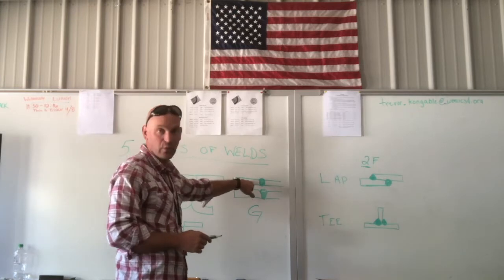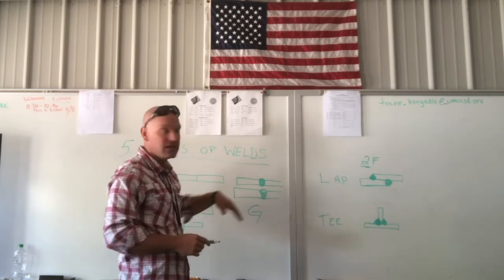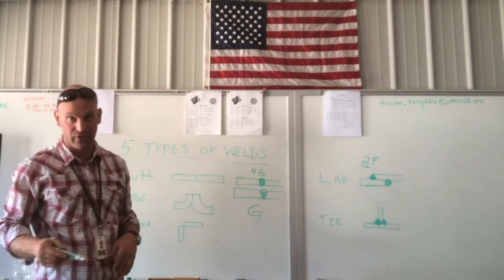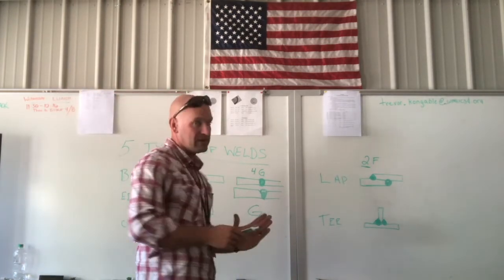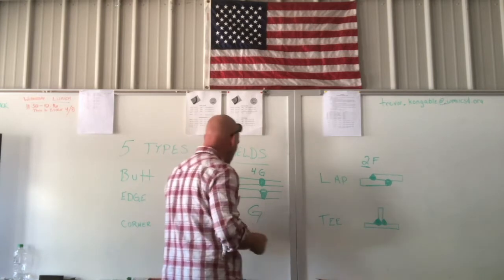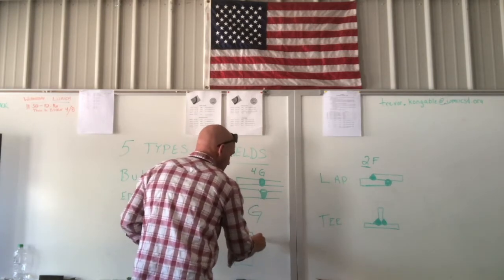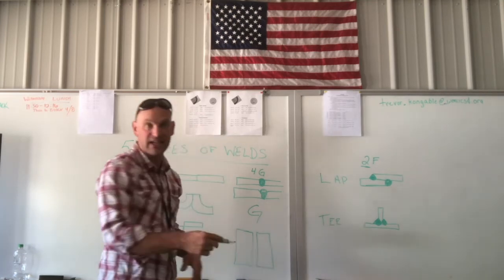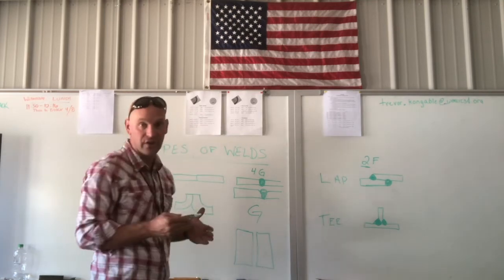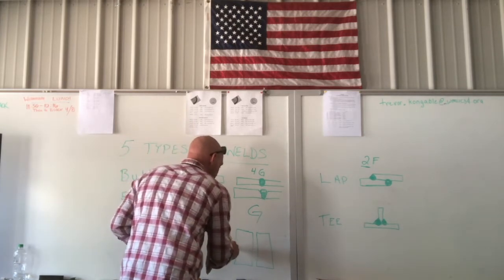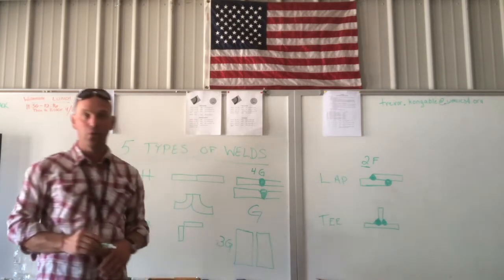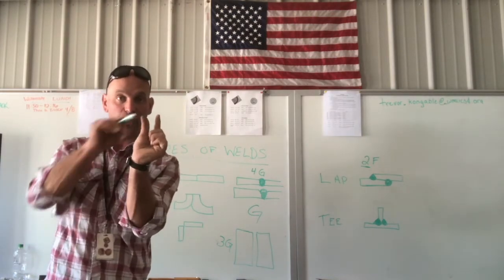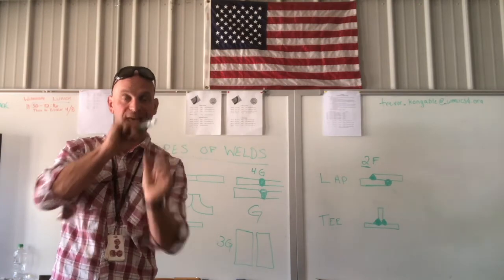So we could have, if we had this weld overhead, it would be a 4G, and that's 4 groove. Maybe it's vertical. We do a weld that is what I commonly refer to as a keyhole, because it ends up looking like a keyhole when we're pushing that weld to the backside. It is a 3G weld, because it's in the vertical position, and it's a groove weld where we're welding that groove.